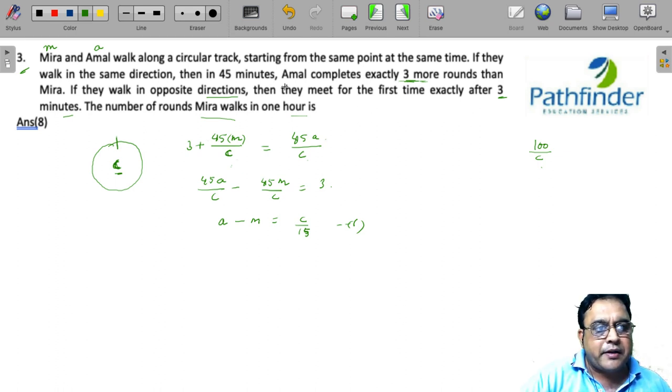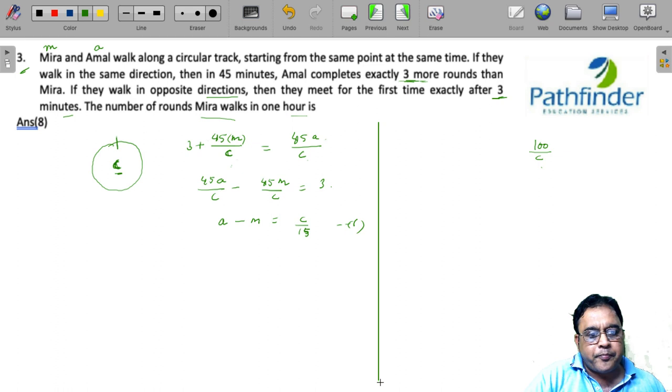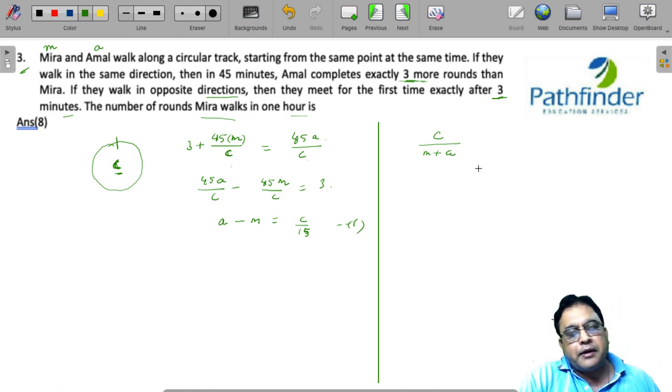The next part, if they walk in opposite direction, they will meet for the first time after 3 minutes. So, if they walk in opposite direction, then C is the circumference. So, C upon the relative speeds of Meera and Amal must be equal to 3 minutes. Which means 3M plus 3A is equal to C.